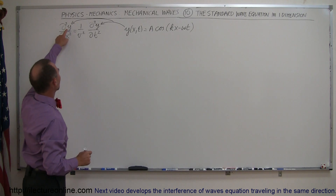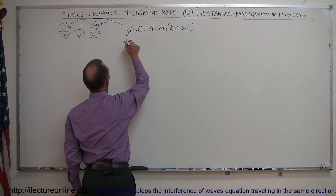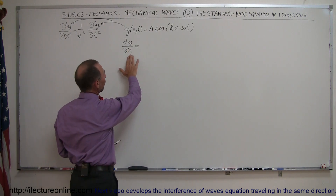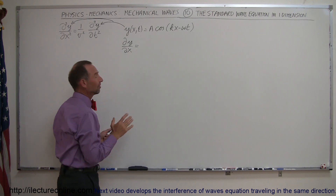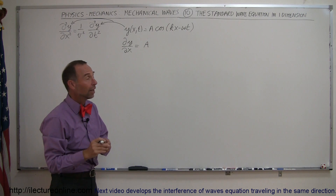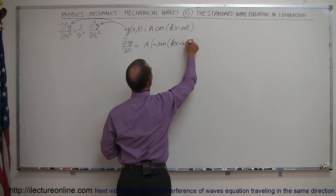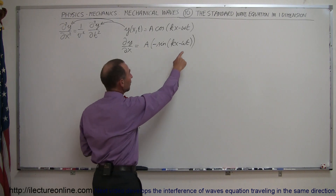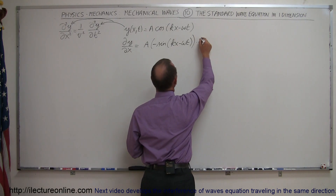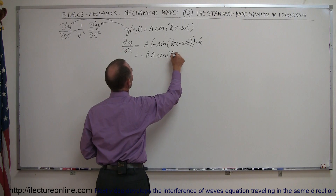The first thing we're going to do is take the first derivative of y with respect to x of this function. So the partial of y with respect to x equals — when you take a partial derivative, all variables are considered constants except for x. So this is equal to a times the derivative of the cosine. The derivative of sine is cosine, the derivative of cosine is negative sine, so that's minus the sine of kx minus omega t times the derivative of the angle. Since t is a constant, only x is a variable, so that's times k. This becomes minus ka times the sine of kx minus omega t.